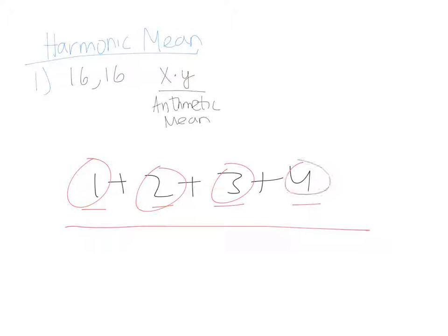So in this case, there are 4 numbers, so I'll divide it by 4. And the arithmetic mean would just be 10 divided by 4, which is, in simpler form, 5 over 2. So that is the arithmetic mean.